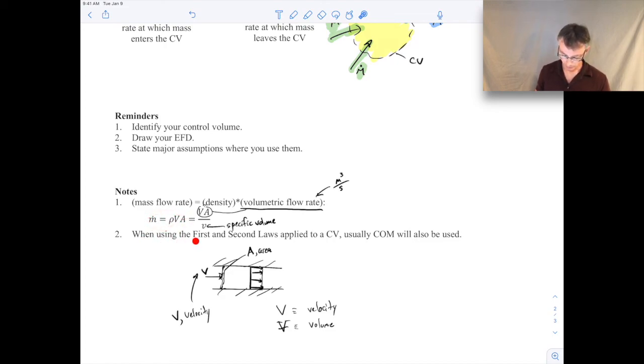One other thing to note is that when we use the first and second laws applied to a control volume, so we're going to be covering the first law of thermodynamics for a control volume in the next lecture, and then later on we'll do the second law. But when we apply them to a control volume, usually we have to use conservation of mass in the analysis as well. So these fundamental relations are often used together. So conservation of mass and the first law, conservation of mass, the second law, and the first law. You often have to use them at the same time when you do analyses, and you'll see that in the examples.